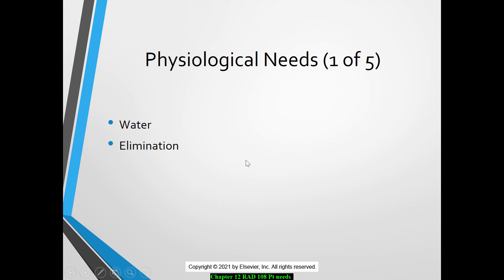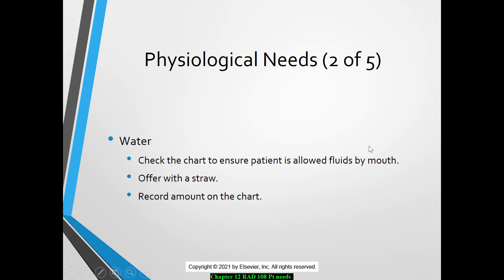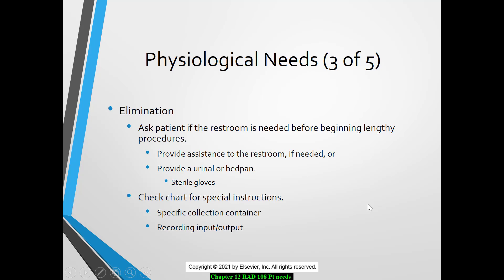When we talk about elimination, we are talking about that urgent need to void. They may have a full bladder causing discomfort and moving on the table because they have to go to the bathroom. A patient's immediate and pressing needs must take top priority over the procedure. If they need to go to the bathroom, get them off the table, let them relieve themselves, and then bring them back so they can finish. For water, check your chart to make sure they're allowed fluids — it's often easier with a straw. Report back to the nurse how much they had.